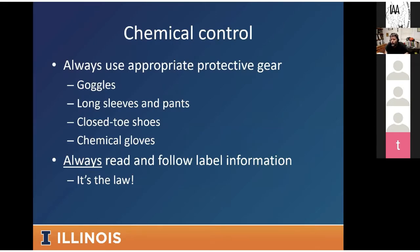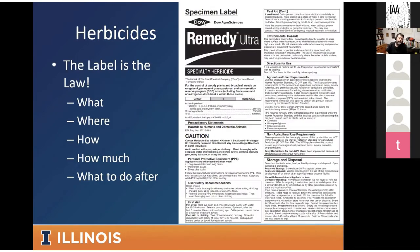I'm going to spend more time talking about chemical control. Anytime you're using herbicides, make sure to use appropriate protective gear — eye protection, long sleeves, long pants, close-toed shoes, and chemical-proof gloves like nitrile. It's also very important to read and follow the label information. An herbicide label is the law — it's a legal document that you're required to follow. The label gives all the information about that herbicide: what it is, where you can use it, how to use it, how much to use, and what to do afterwards.